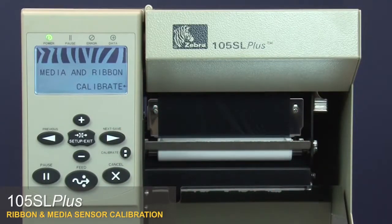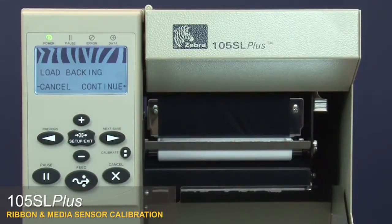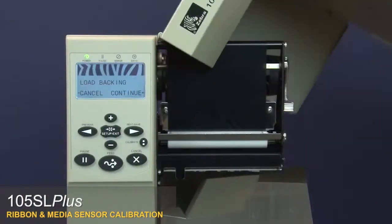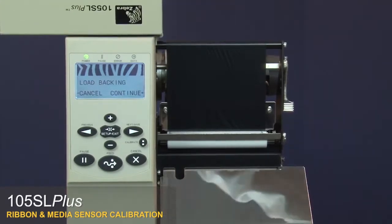Press the plus button to calibrate the ribbon. The control panel shows load backing. Open the media door. Open the printhead.